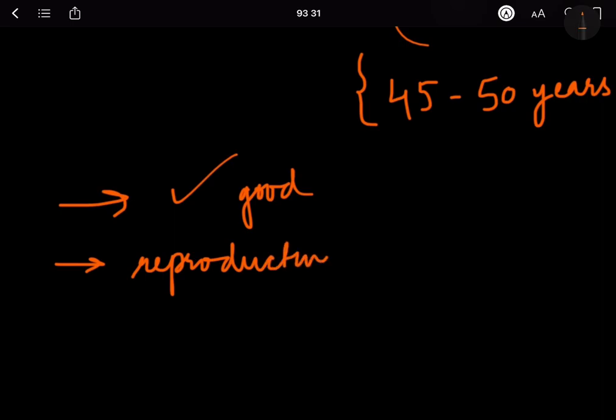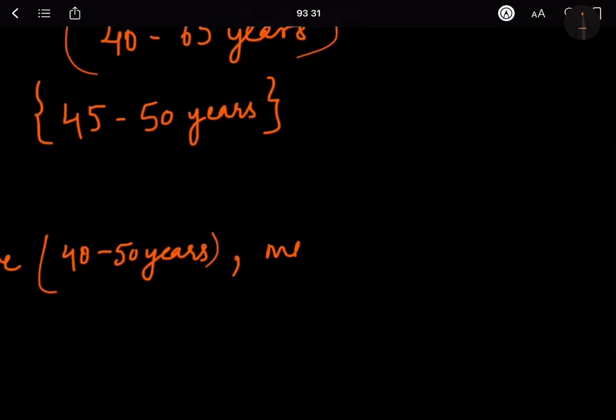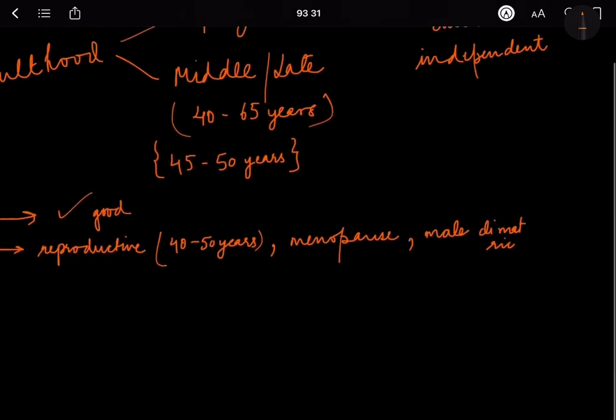When you hit the age between 40 to 50 years, reproductive changes start to happen. In females there is menopause, and then along with that there is male climateric. This is like a decrease in the sexual interest in sexual activities that starts to get very low.